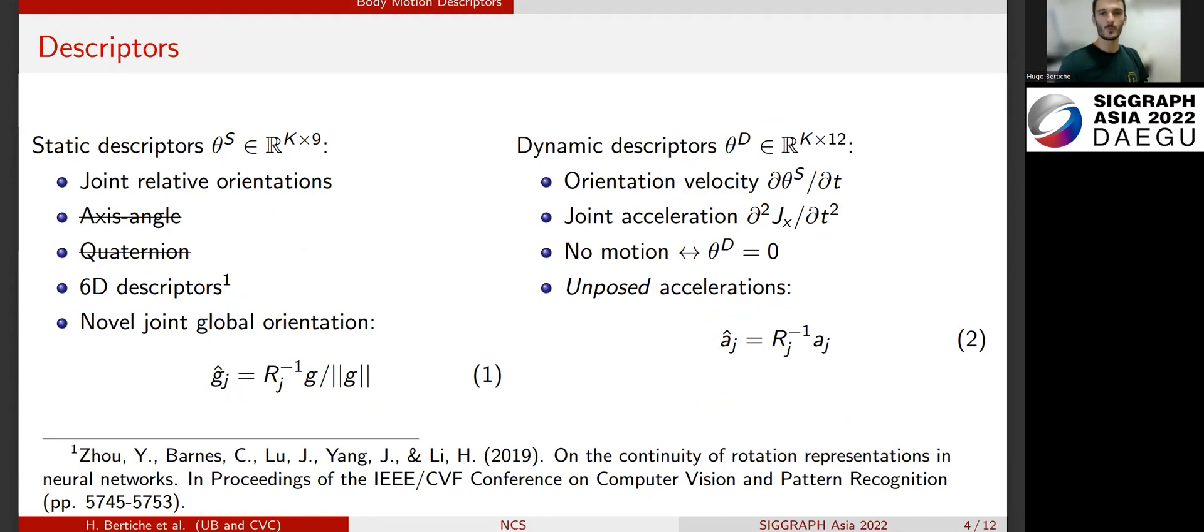On the other hand, we have the dynamic descriptors. We define this as the time derivative of the static descriptors and also the joint accelerations. Defined like this, when a sample has no motion, the dynamic descriptors will have a value of zero. We also use unposed accelerations as we did with gravity.